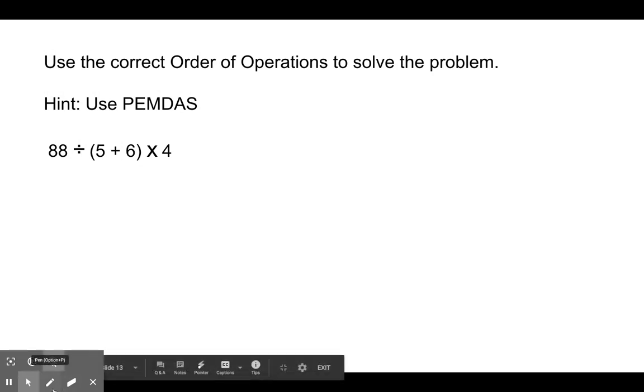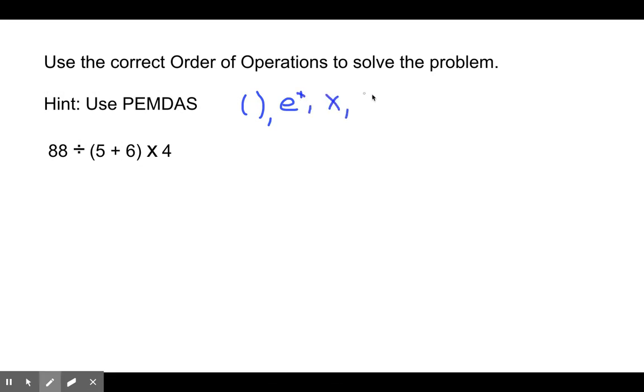Welcome back. So PEMDAS means parentheses, exponents, multiplication, division, addition, and subtraction. So now we're going to solve this problem over here looking at our order of operations. The first thing I see are parentheses. 5 plus 6 is 11. Now I know multiplication and division come together here. The way that we do this is it's not always multiplication first. We have to look to see which one comes in order first. And it will be actually 88 divided by 11 that we do first.